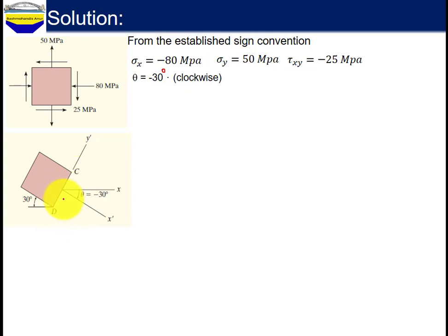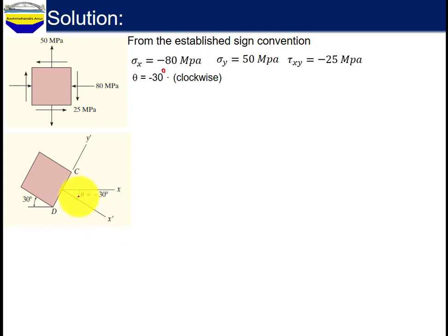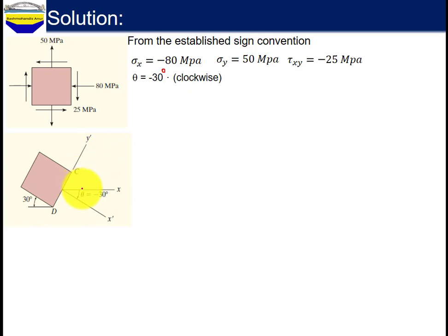If you want to see the rotated plane, the orientation will be in the x-prime and y-prime coordinate system. The rotation angle is 30 degrees.